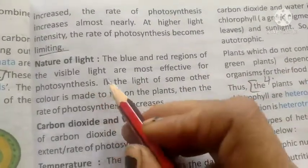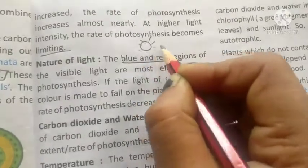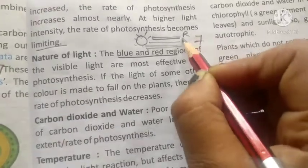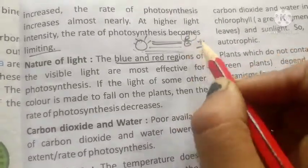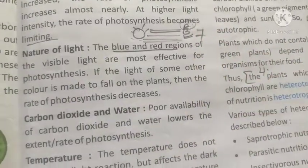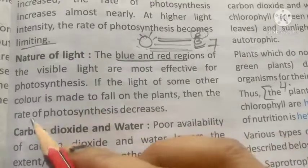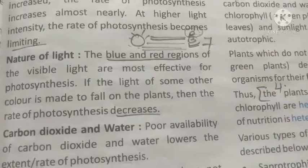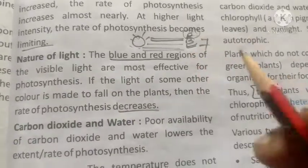Nature of light: the blue and red regions of visible light are most effective for photosynthesis. There are seven types of rays in visible light, and red and blue rays are the most effective. If light of some other color falls on the plant, the rate of photosynthesis decreases.